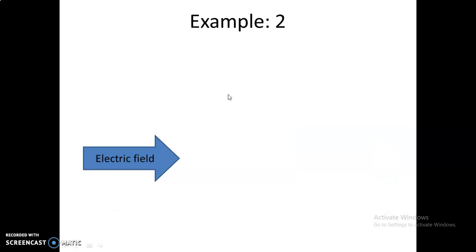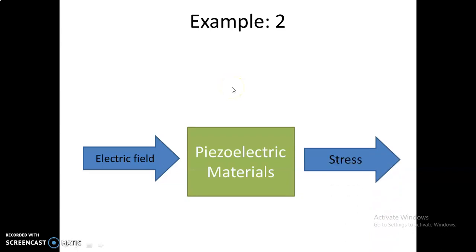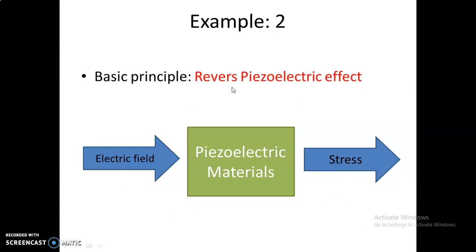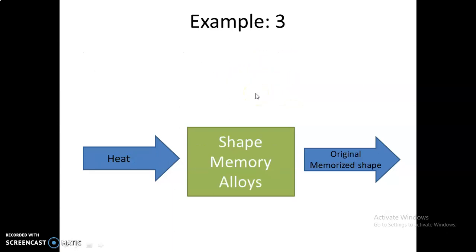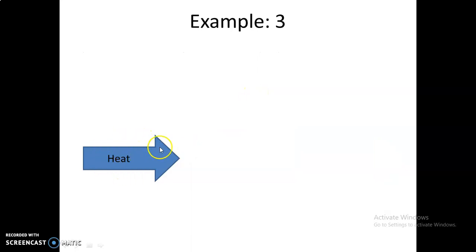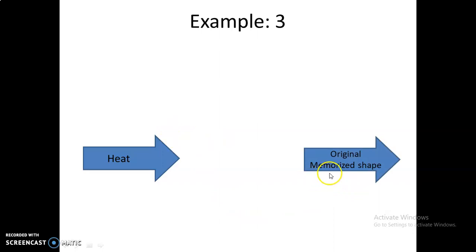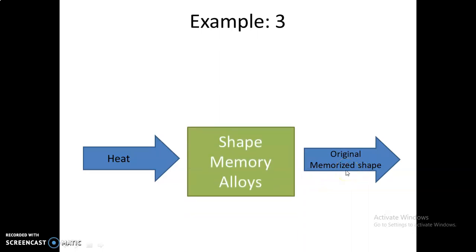If you apply an electric field or electricity on a material and it may change to its original memorized shape or its initial shape, then the material is known as shape memory alloys. Here, the role of the material is as an actuator.